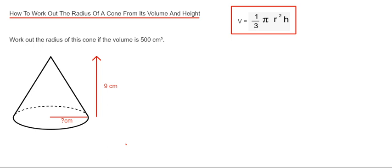So we've got to work out the radius of a cone if the volume is 500 and we're given the height of 9 cm in the diagram. The first thing we need to do then is substitute the height, which is 9, and the volume, which is 500, into this formula. So we've got one-third times pi times the radius squared times 9 equals 500.